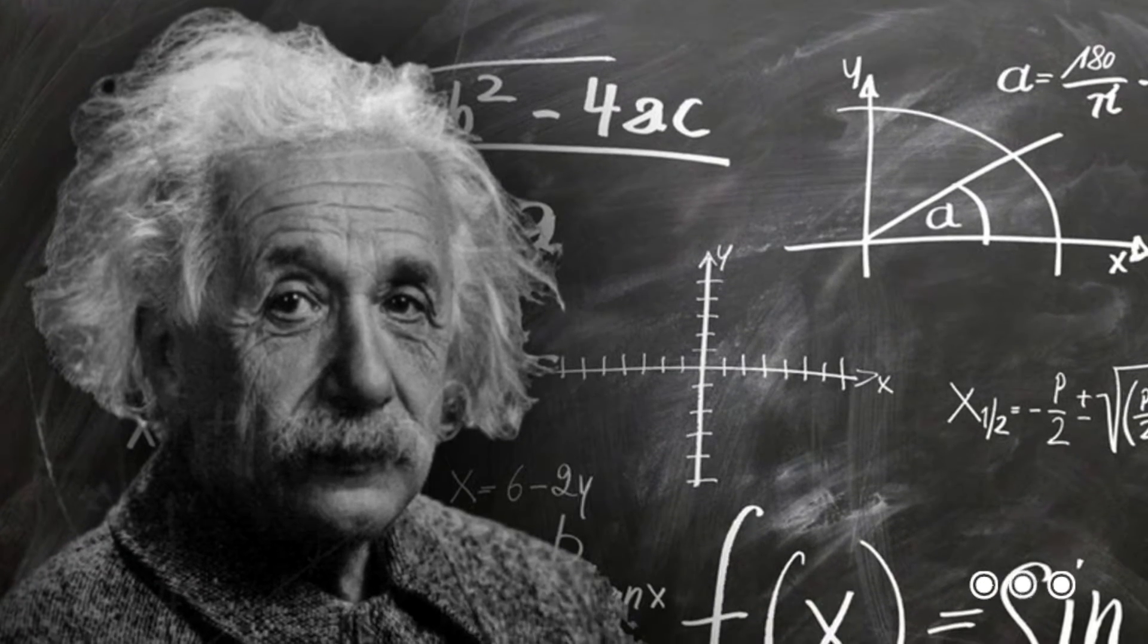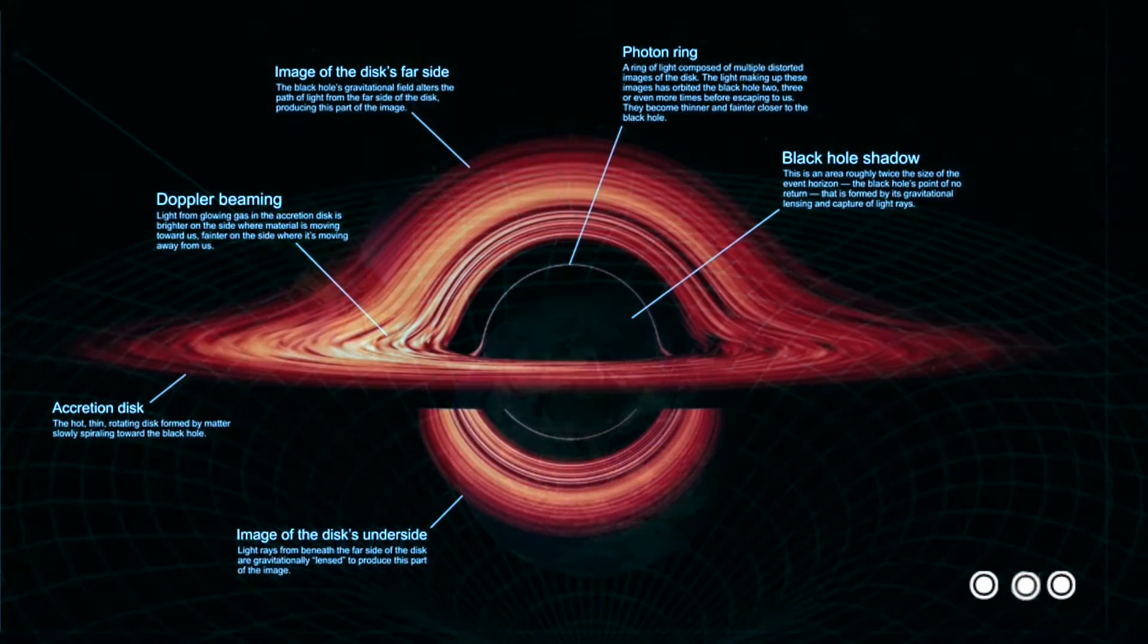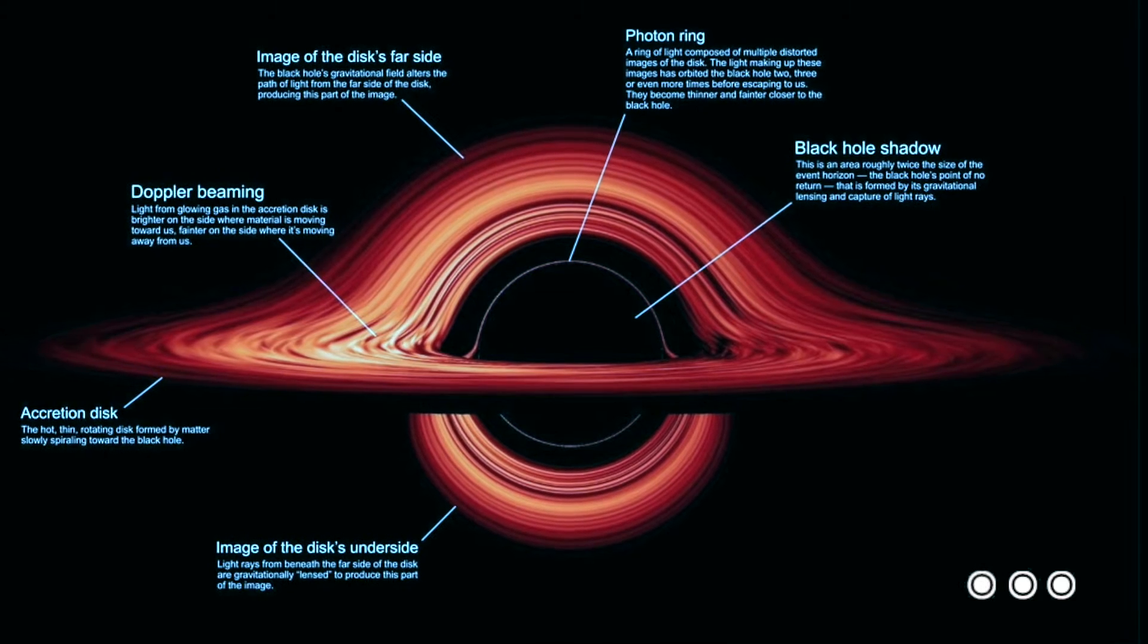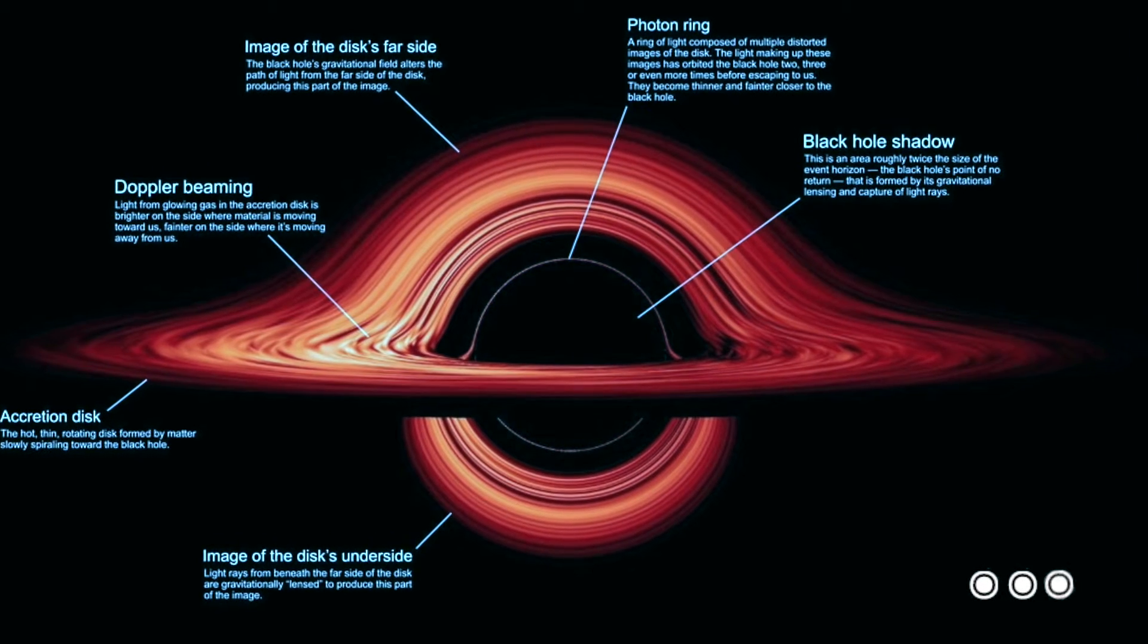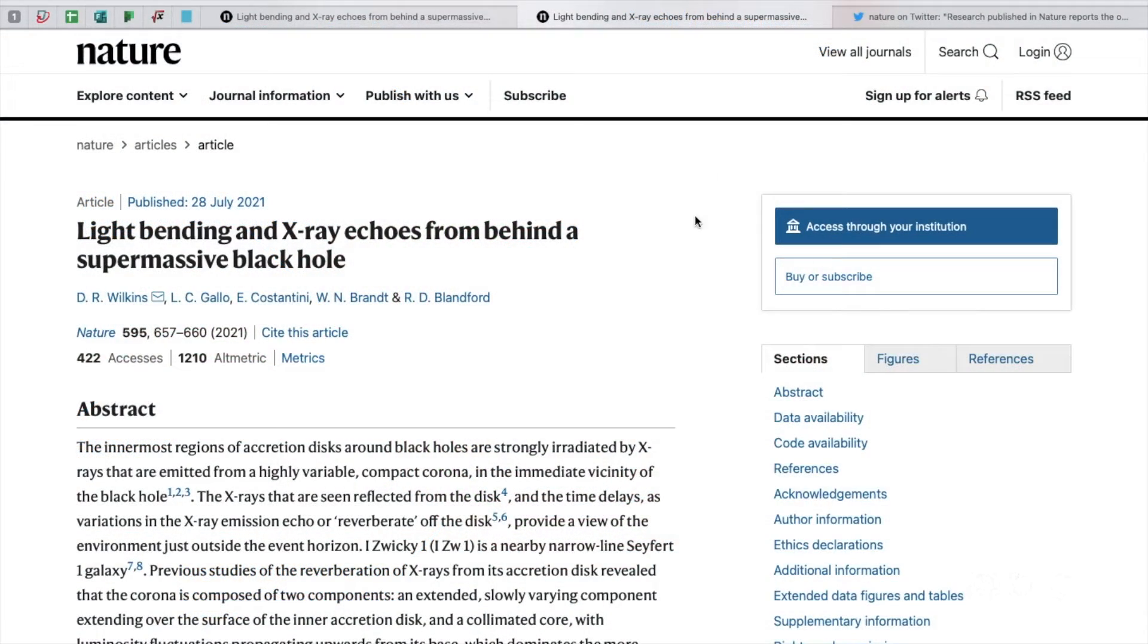The gravitational field is so strong that matter is squeezed in. Nothing, not even light, can escape from a black hole. For this reason, a black hole is truly black. However, scientists have now observed light bending and X-ray echoes from behind a supermassive black hole.